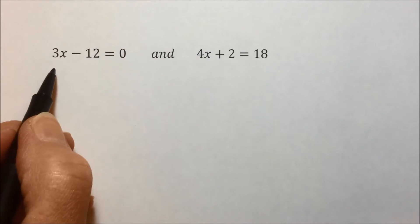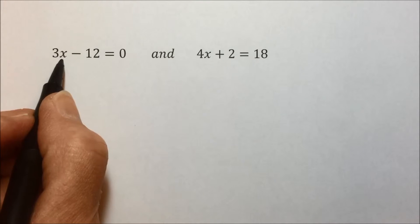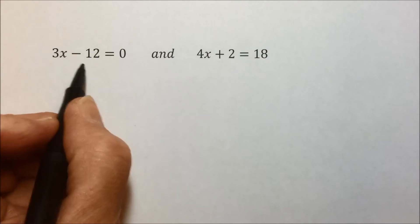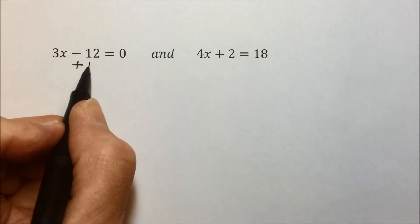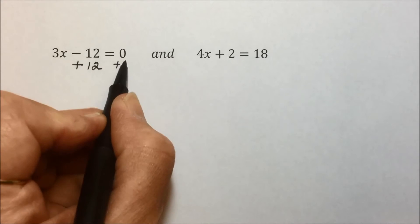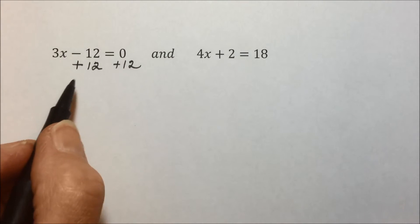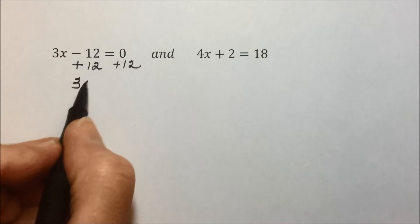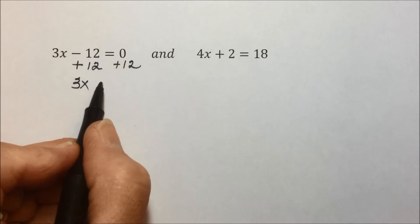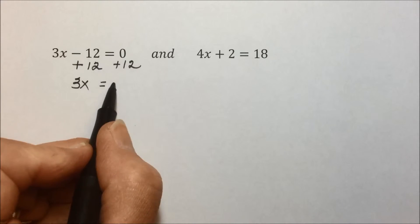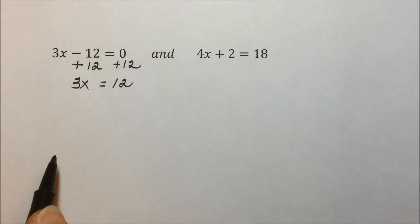Again we'll solve the equation to determine the value of the variable that makes it true. To get the variable by itself here, undoing subtraction with addition. What we do to one side, we do to the other, based on the addition principle of equality. Leaving 3x, since the negative 12 plus 12 are canceling out. And simplifying on the right, we end up with 12.